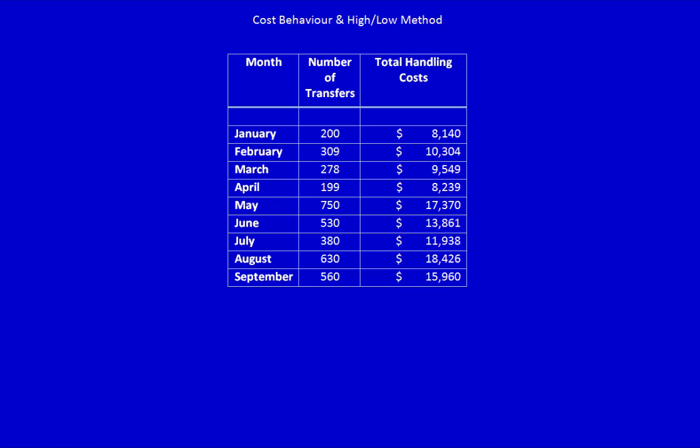Let's do the division. $8,140 divided by 200 is $40.70. If I take $10,304 and divide it by 309, it's $33.34. Keep doing the division for each one: $34.35, $41.40, $23.16.